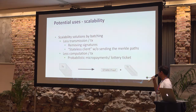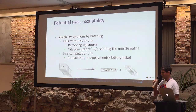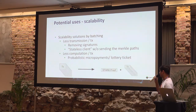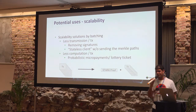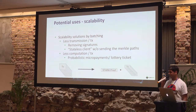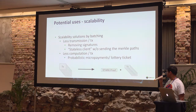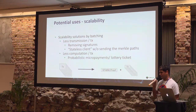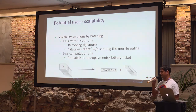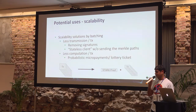If I take an estimation of the saving you can get: by removing the signatures you get about 2 times more throughput, and by removing the Merkle paths — you still have to send some data — you can get something like 10 times more throughput asymptotically.